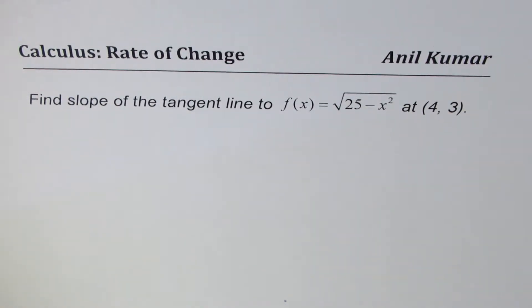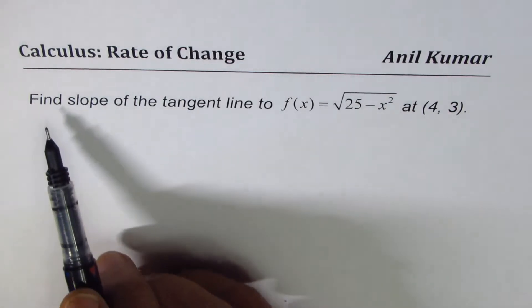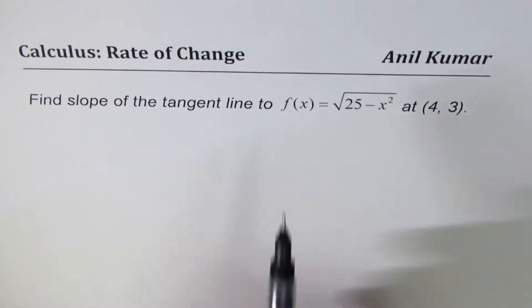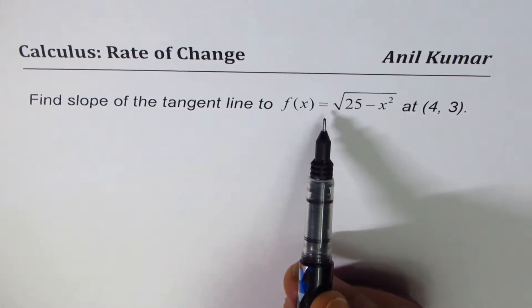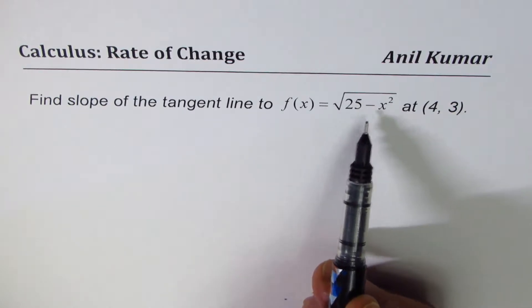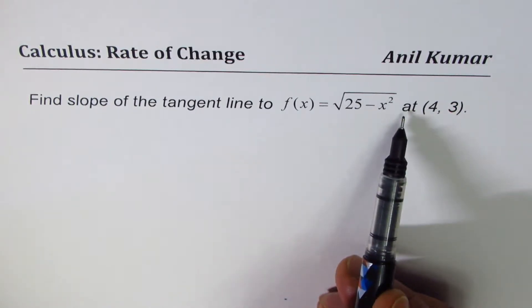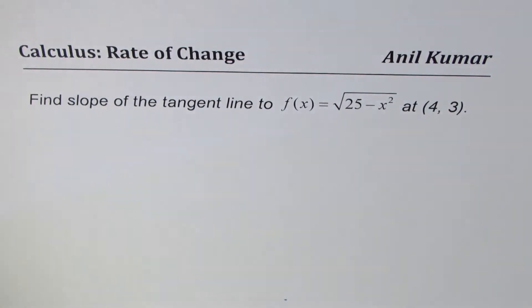I'm Anil Kumar, where we will discuss rate of change or slope of a tangent line on a semicircle in this particular example. Find slope of the tangent line to f(x) equals square root of 25 minus x squared at (4, 3).